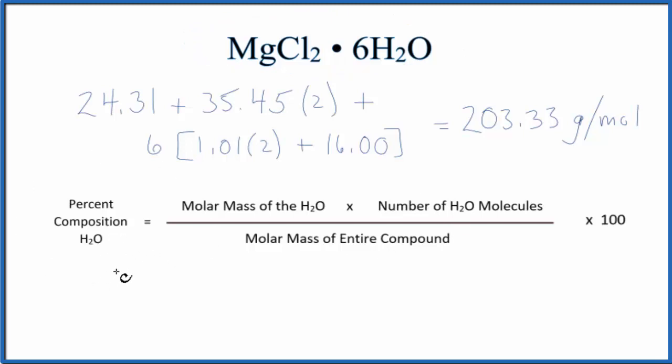Let's use the equation to find the percent composition by mass of the water. We take the molar mass of water. That's 18.02 grams per mole. And we multiply that by the number of water molecules. Here we have six separate water molecules around the magnesium chloride.